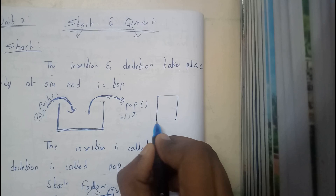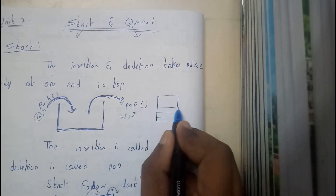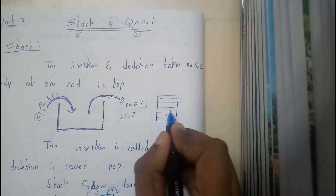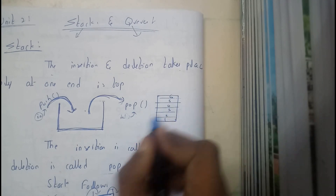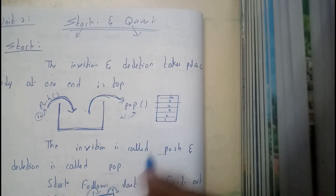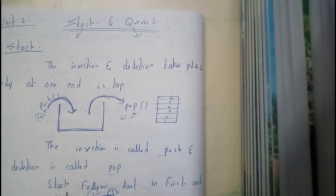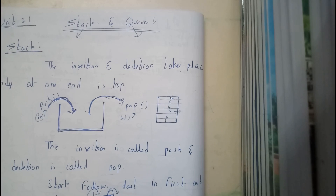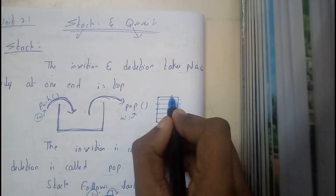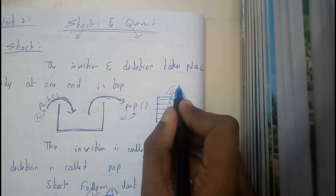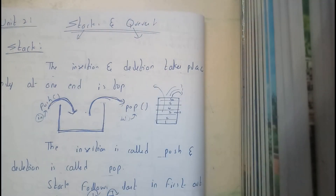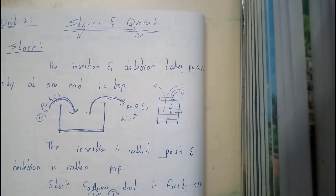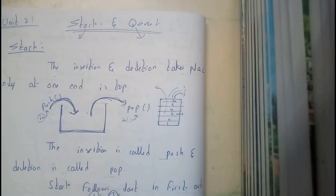Let us assume there is a stack of books — book number one, two, three, four, five, six. We got six books. There is a condition that you should not take books from the middle. I cannot directly take book three. So I'll be taking six, five, four — then I'll have a chance to remove three. This is the ultimate concept of stacks.